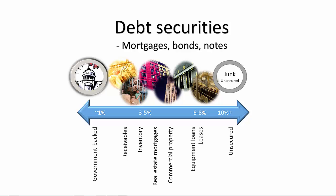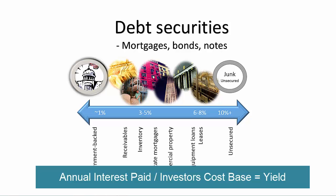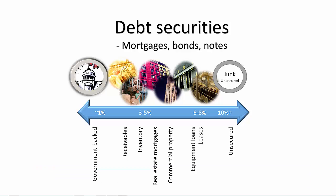For argument's sake, let's put some ballpark numbers on the spectrum of returns one might expect from debt securities. At the low end, the floor is set by government T-bills, and at the high end the rate of return might be 10% or more for unsecured loans. Debt securities pay interest to the investor. The interest paid divided by the investor's cost base is called yield. The company is the seller or issuer looking to raise cash proceeds to reinvest into their business, and both parties get what they want if all goes according to plan.